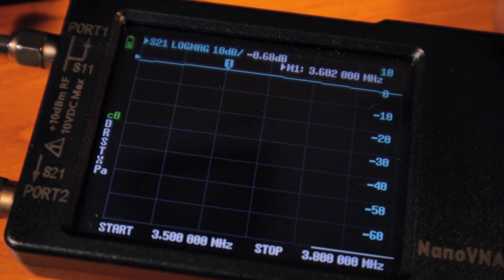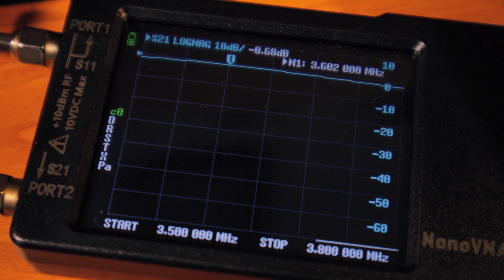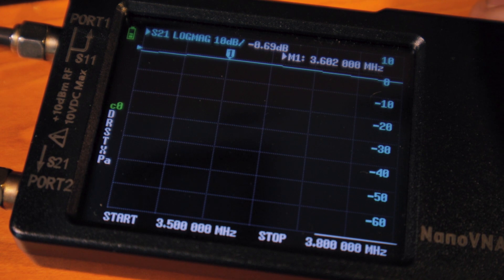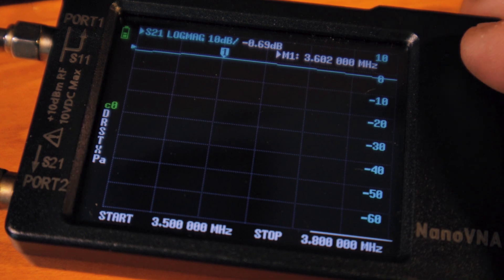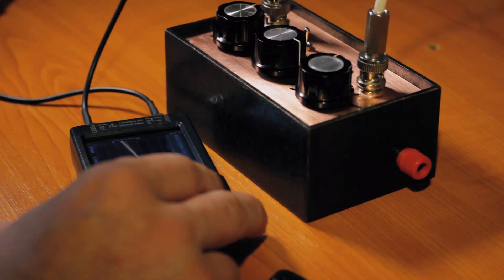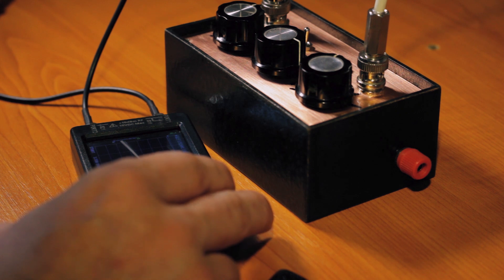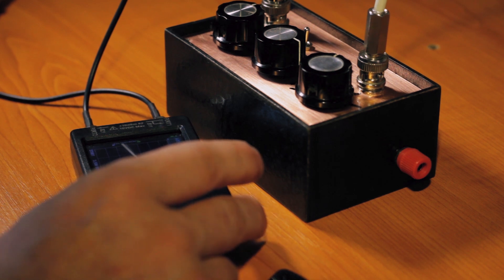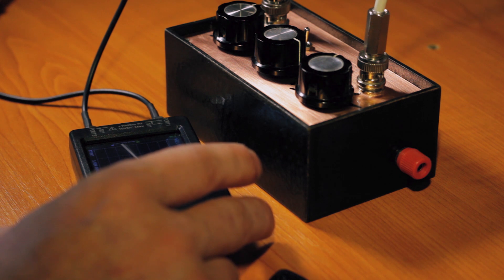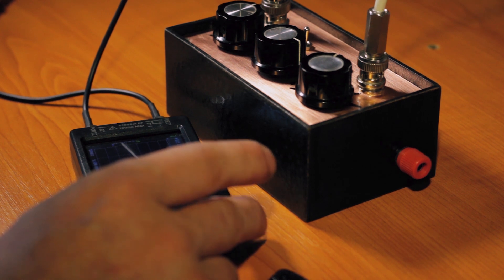The dB loss on the 80 meter band tuned on 3.6 megahertz is about -0.68 decibels, so it's nearly the same as it is on the 40 meter band. It's great, I'm happy. One more thing, if you decide to test yours, don't forget to calibrate it using all the wires that are connected between the antenna tuner and nanoVNA just to avoid any misreadings.